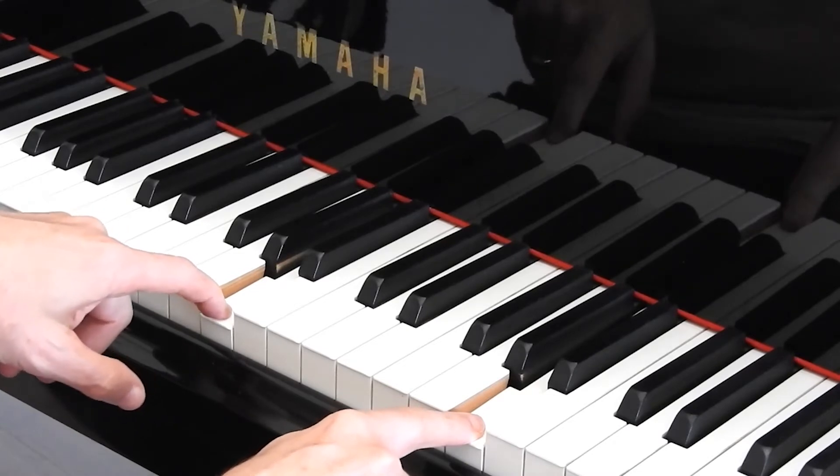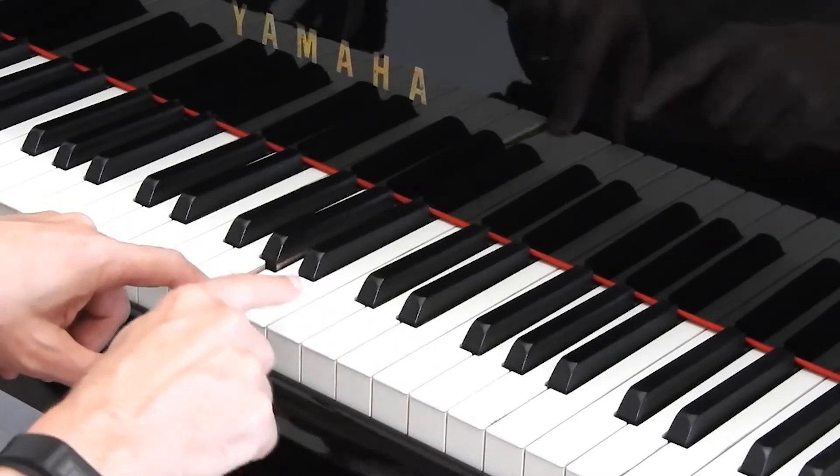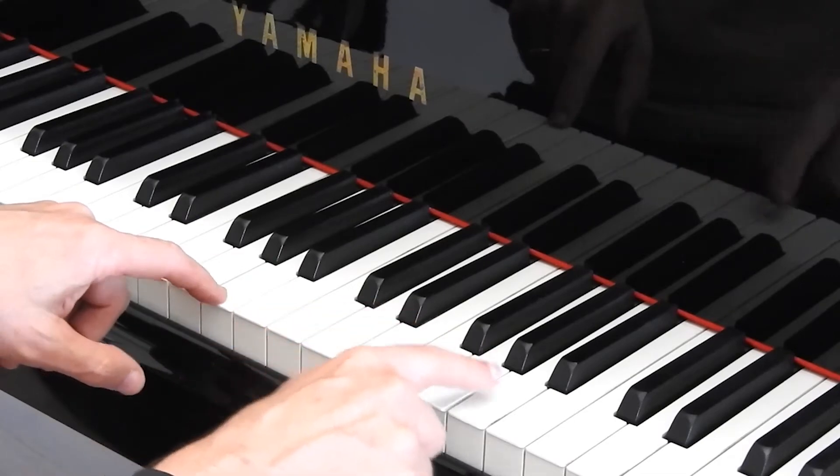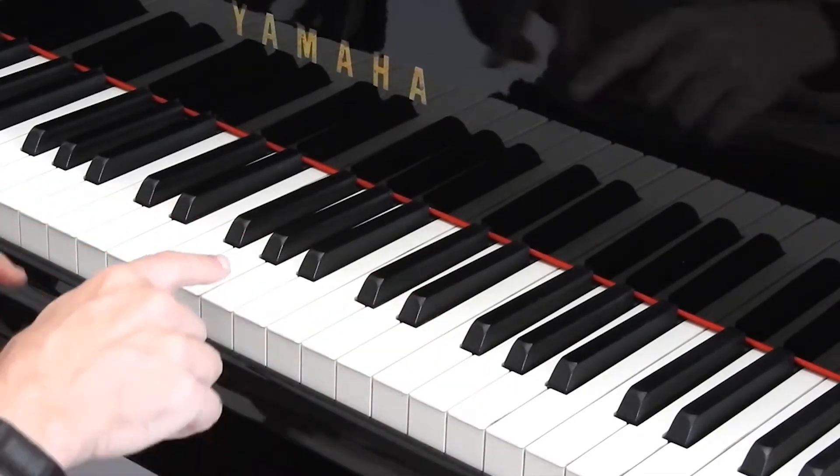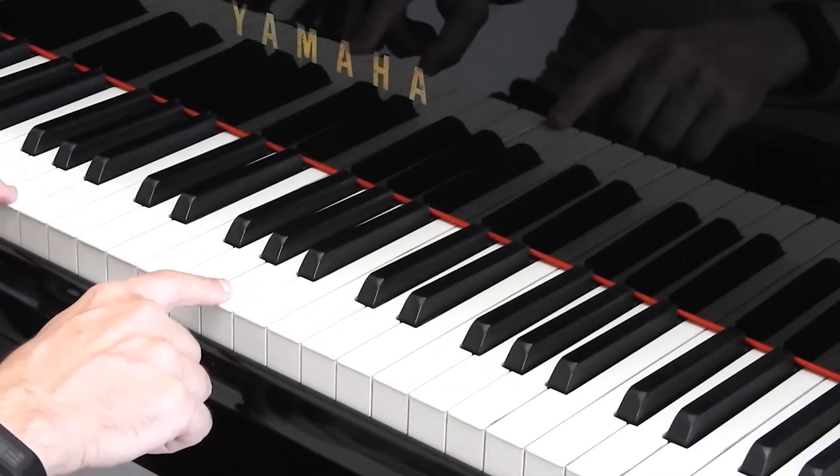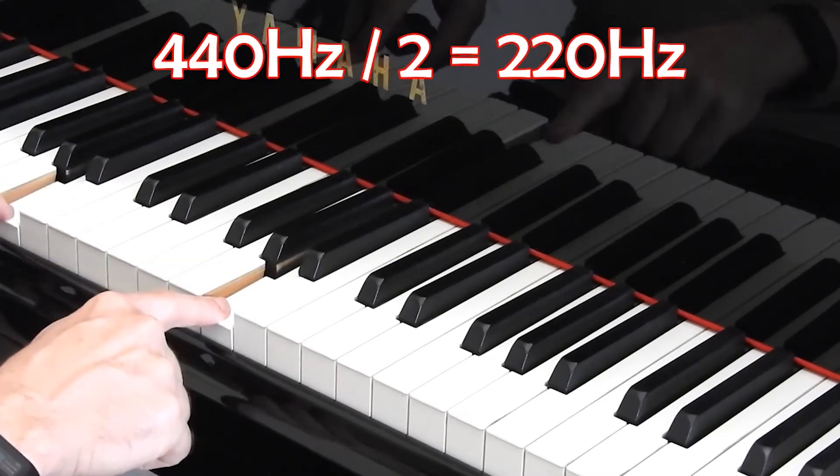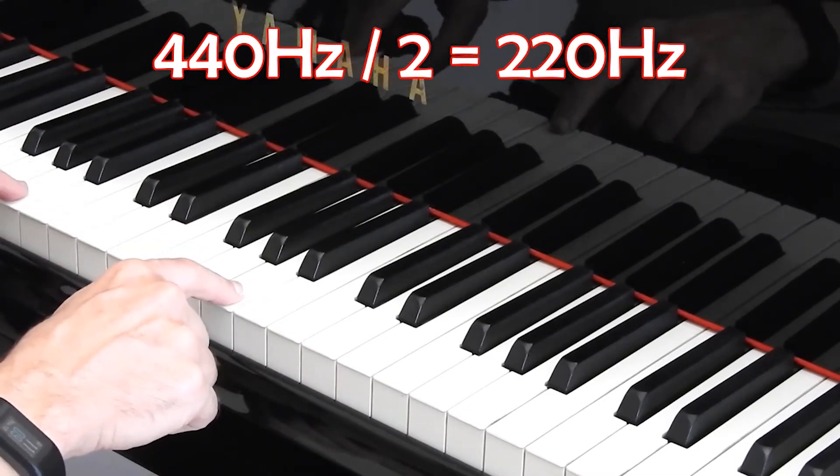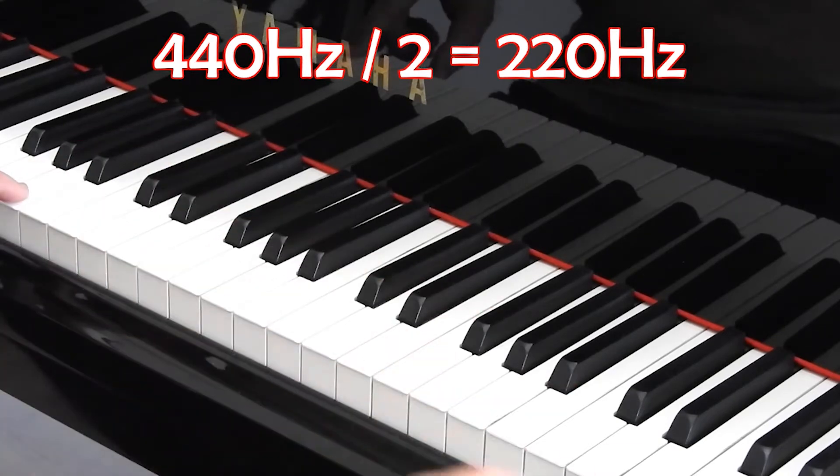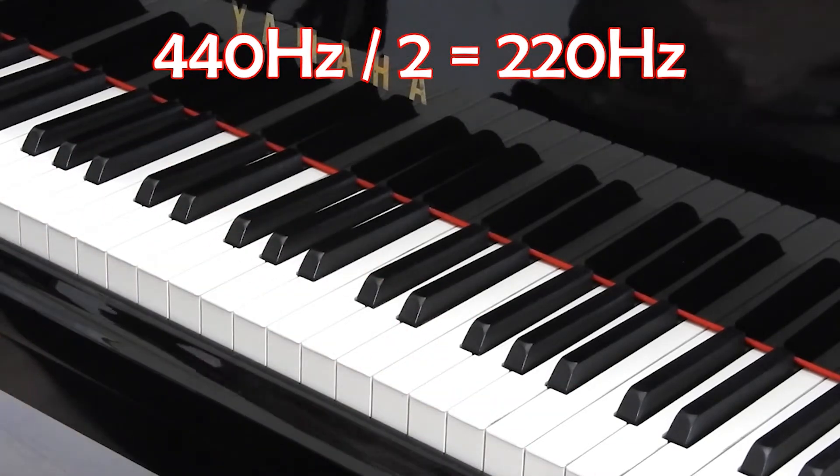Those are both A's and they're what's called an octave, octave meaning eight, one, two, three, four, five, six, seven, eight notes apart. You can also go down an octave. So if this is 440, then this is 220 Hertz. Those are all A's.